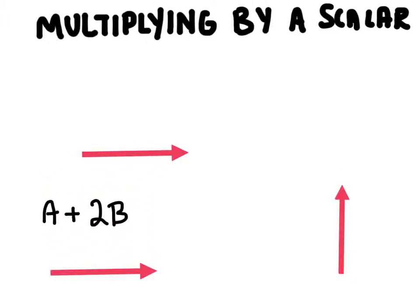And if we want to do 2b, what we're going to do is we're going to increase the magnitude. So it's magnitude only, nothing to do with the direction, by two times. We're actually going to end up with this new vector b, which is twice as big as the original vector b.